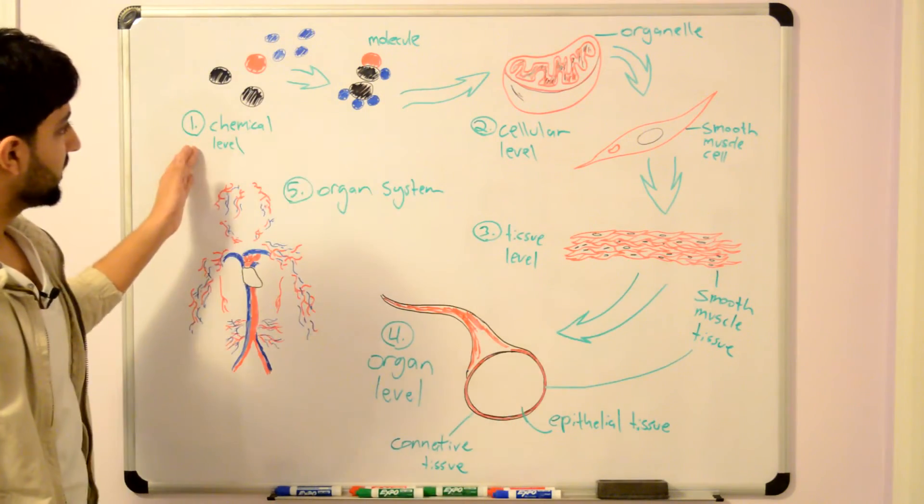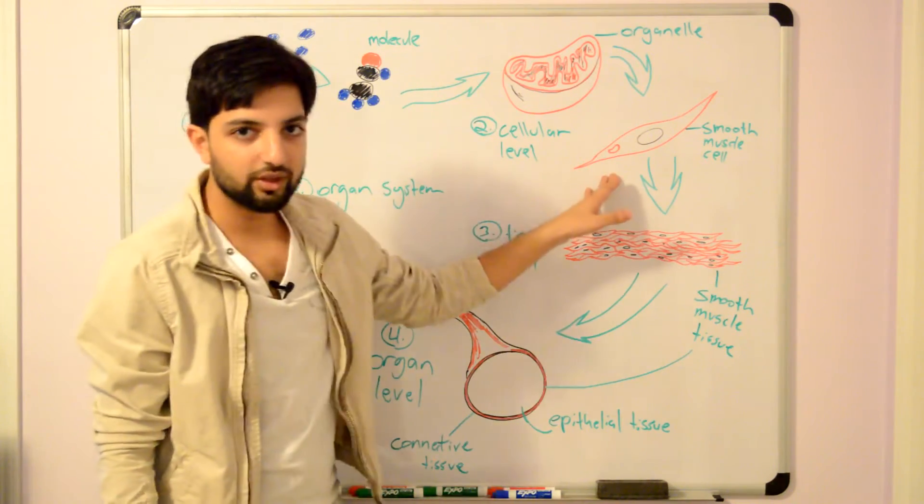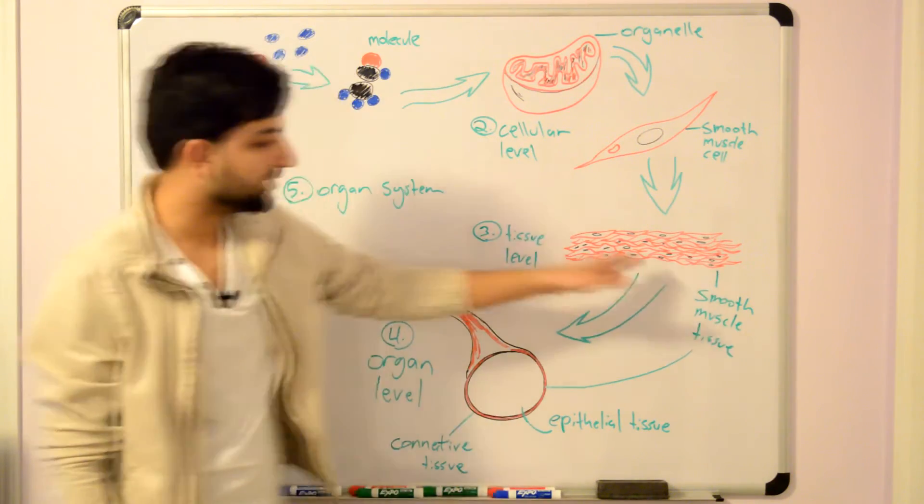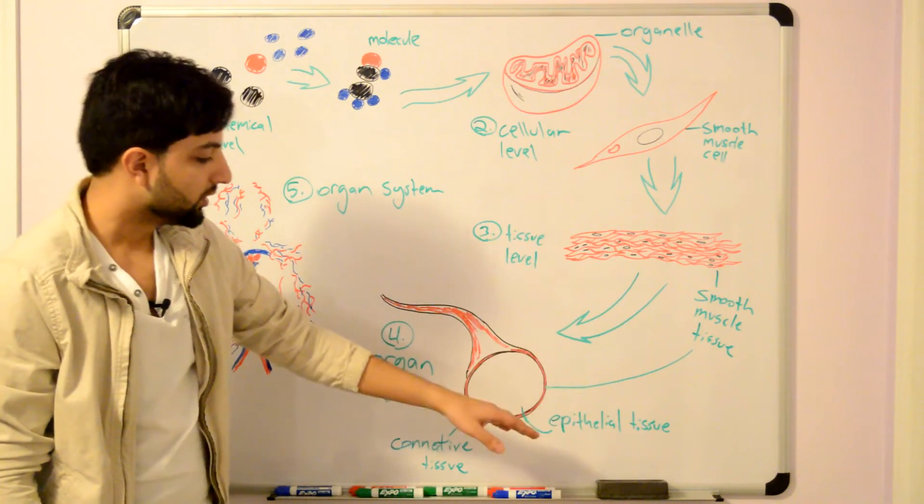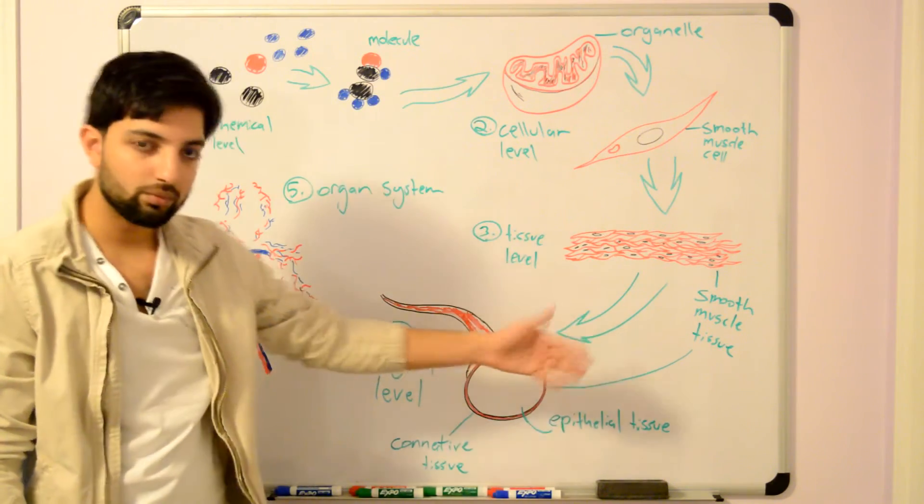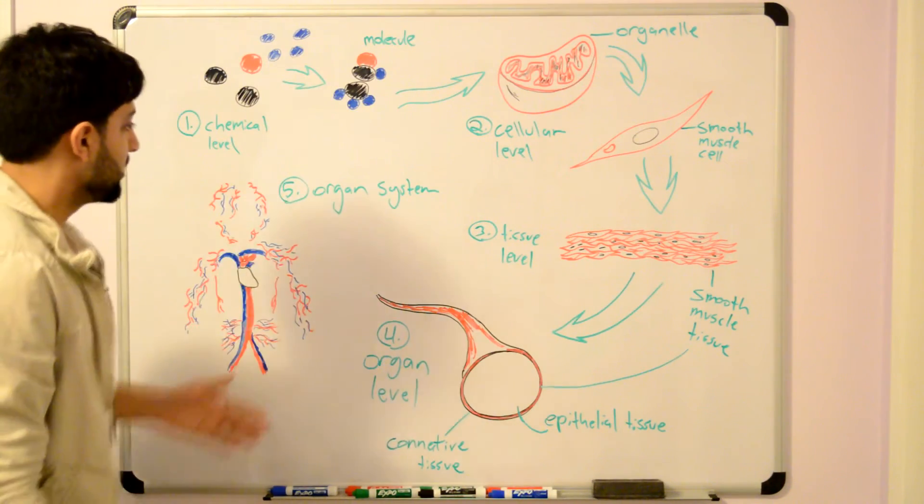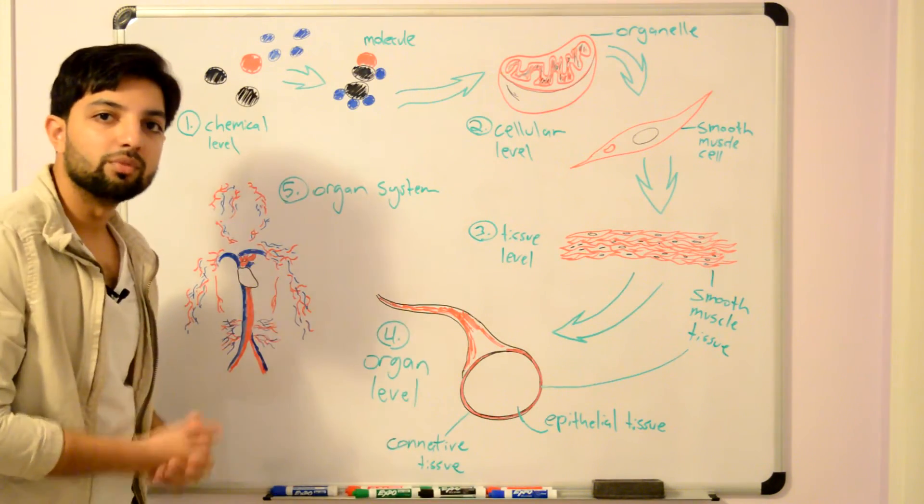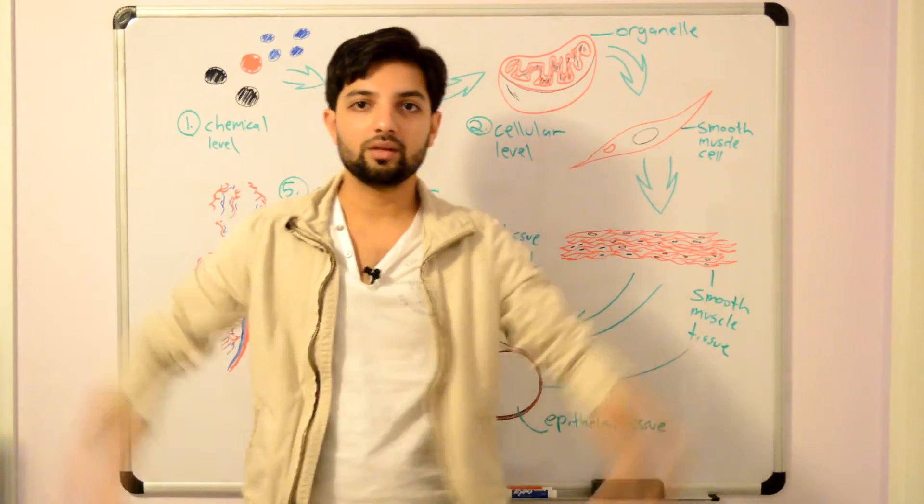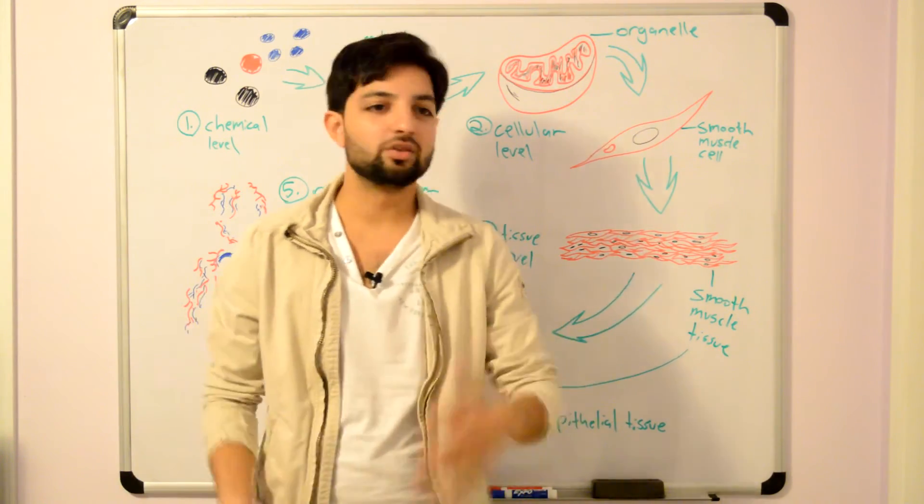To review: you have the chemical level, composed of atoms and molecules; the cellular level, composed of individual cells and organelles; the tissue level, composed of many cells of the same type performing a similar function; the organ level, which is two or more types of tissue coming together and performing a function; the organ system level, which is multiple organs coming together to perform a similar function; and the organism level, which is me—my entire body, all my organ systems working together to teach you anatomy.